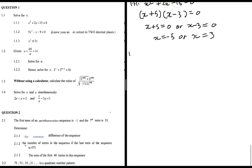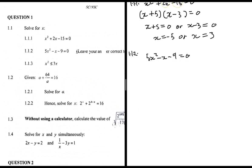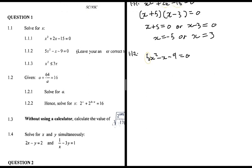Now 1.1.2: 5x² - x - 9 = 0, leave your answer correct to two decimal places. As soon as I see a coefficient of x² that isn't 1, I know I'm going to use the quadratic formula — whether the question asks me to leave it in two decimal places or not. I just use the quadratic formula because I don't want to give myself problems.